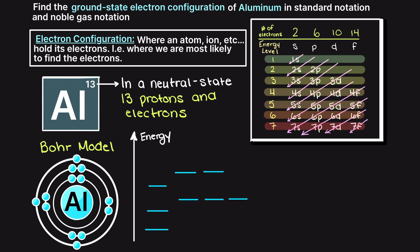We always begin with 1s, as it is our lowest energy shell, and with the s subshell it can hold 2 electrons. This leaves us with 11 electrons left. Next, following our arrows, we have 2s, which again can take 2 electrons. Then we have 2p subshells, and these 2p subshells can hold 6 electrons, leaving us with 3 remaining electrons.